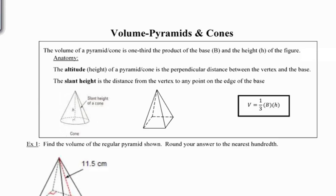First of all, what makes a pyramid and a cone different from the prism and the cylinder? Well, whereas the prism and the cylinder had two bases that were both parallel and congruent, the pyramid and the cone each have only one base.